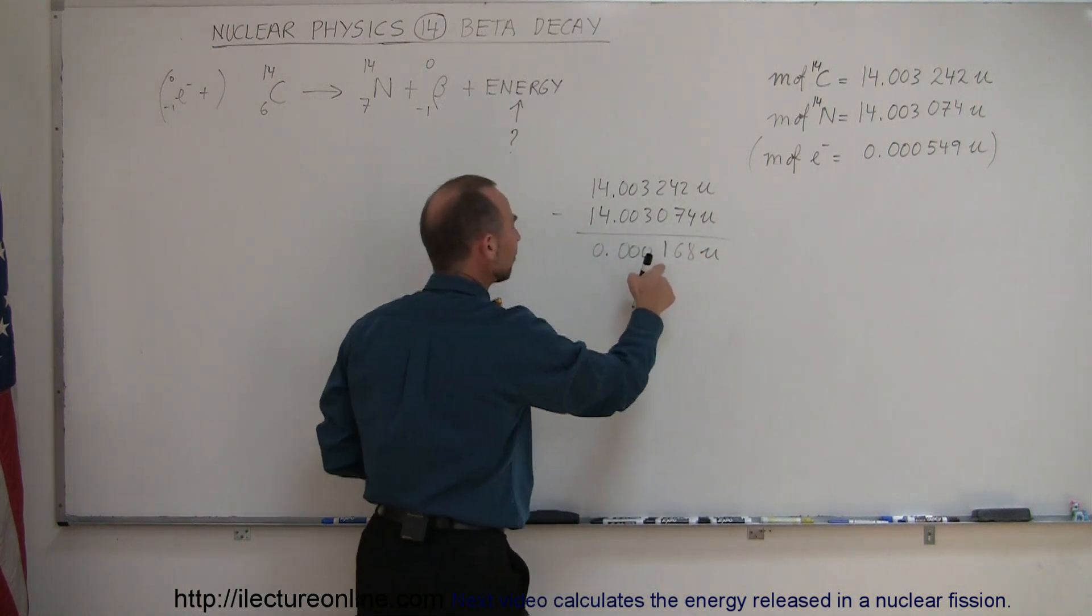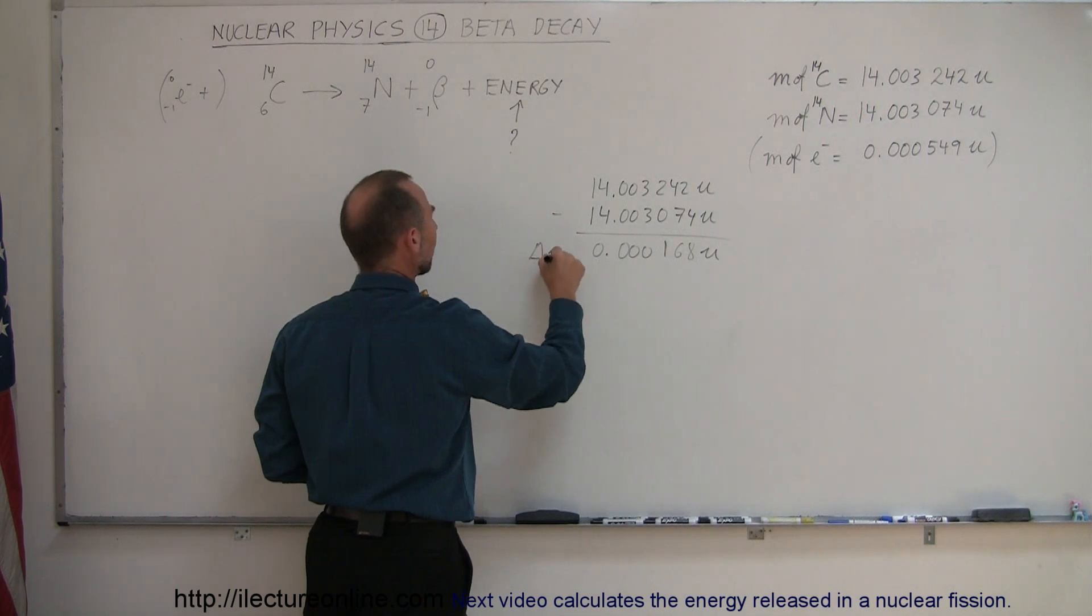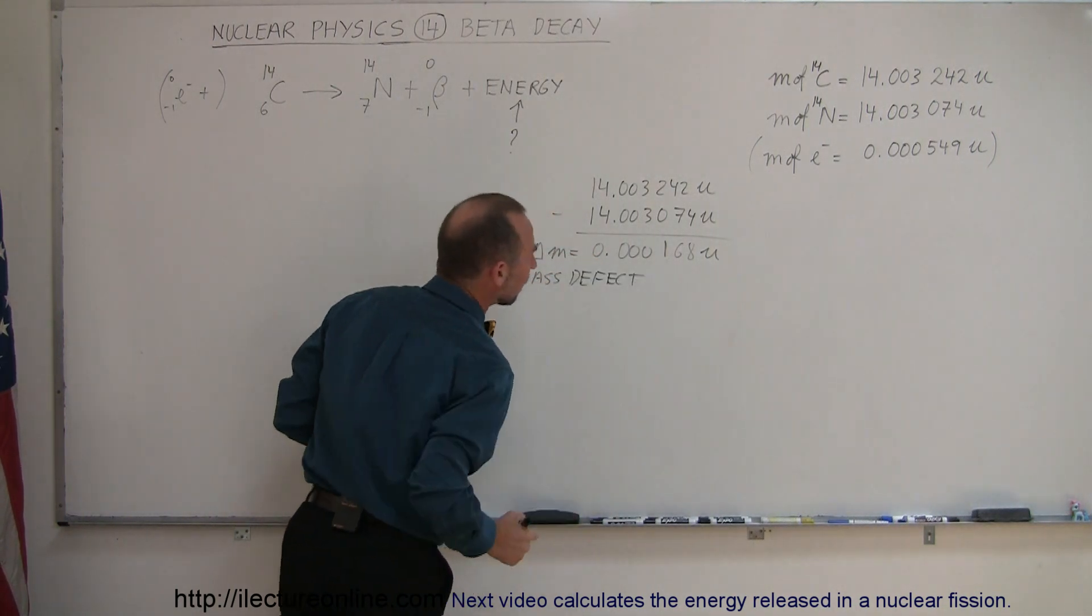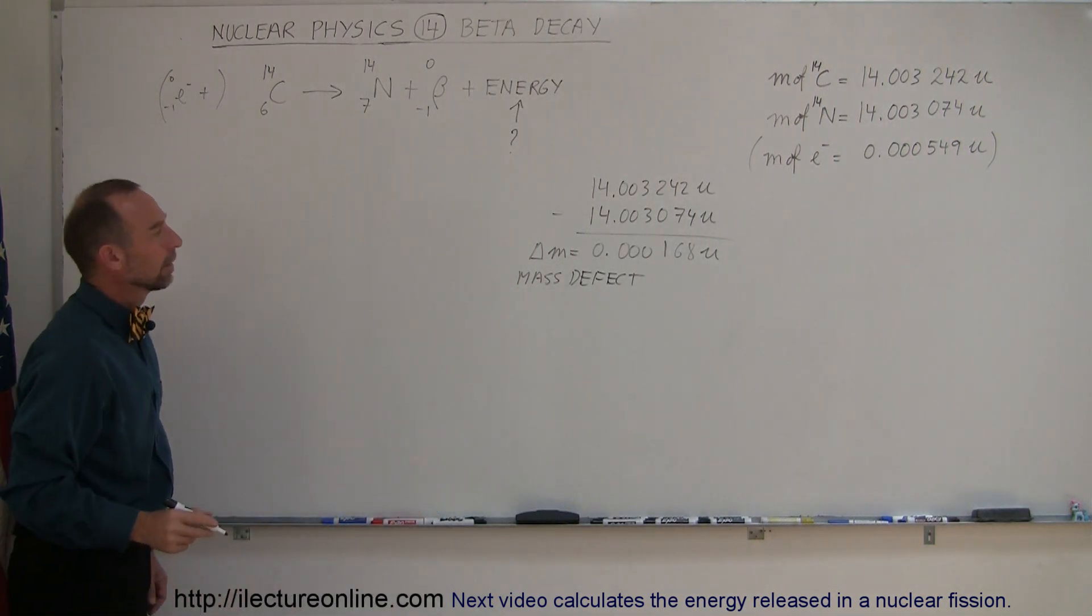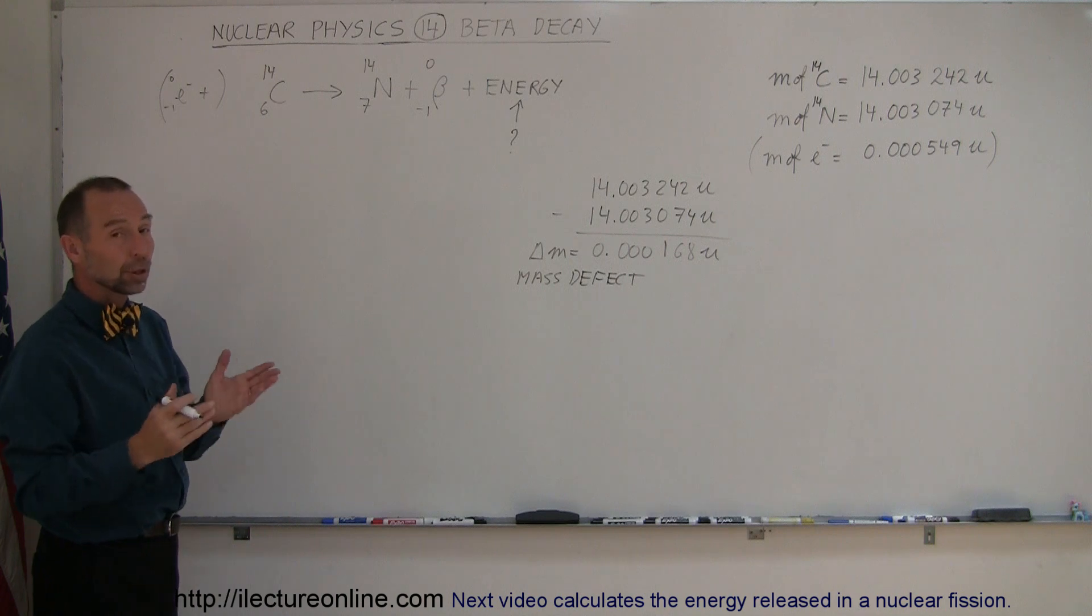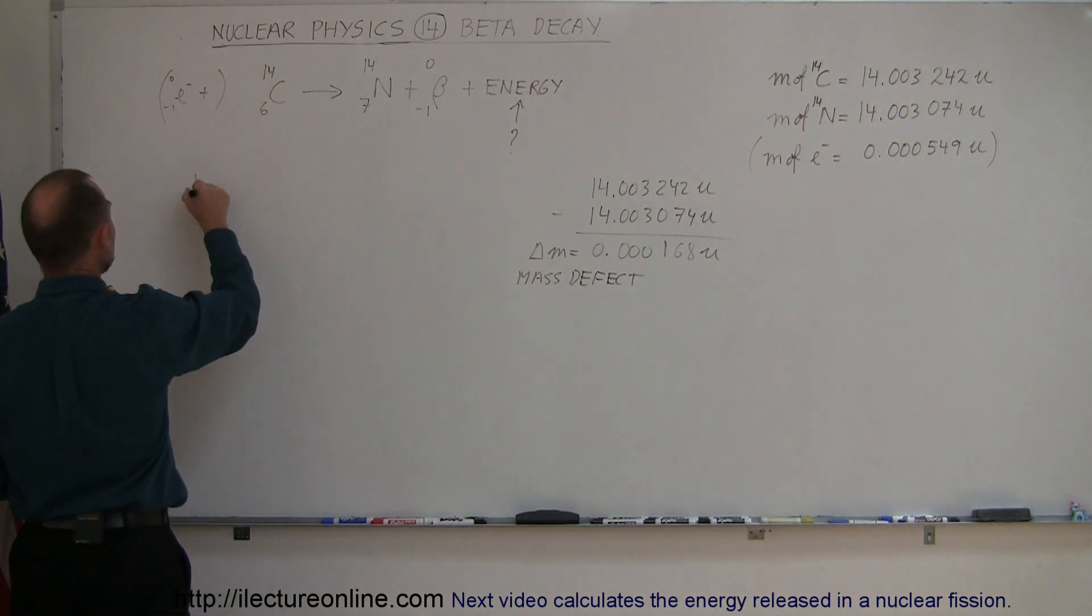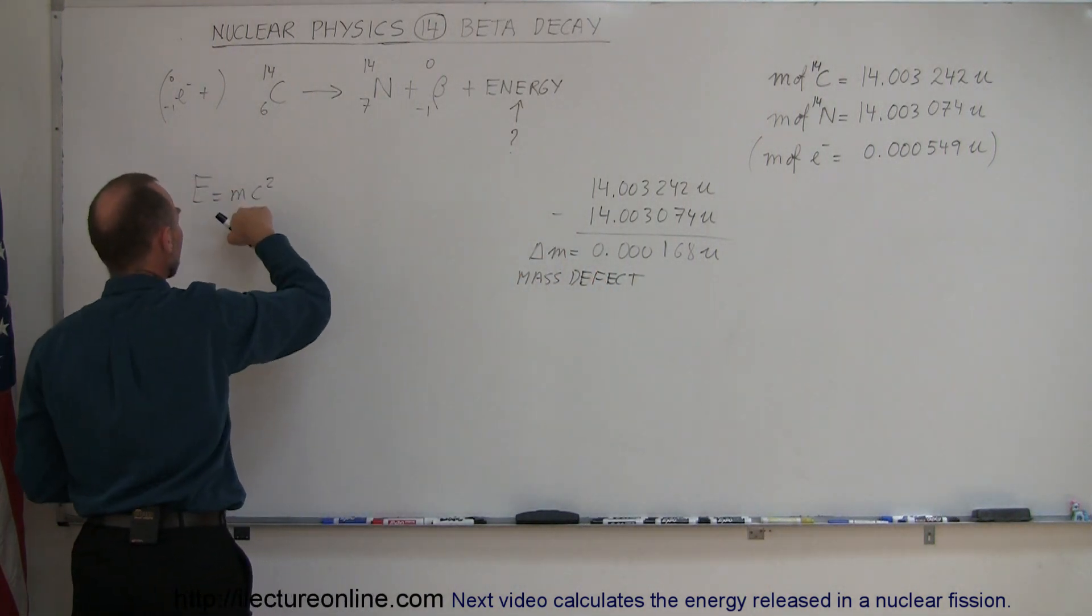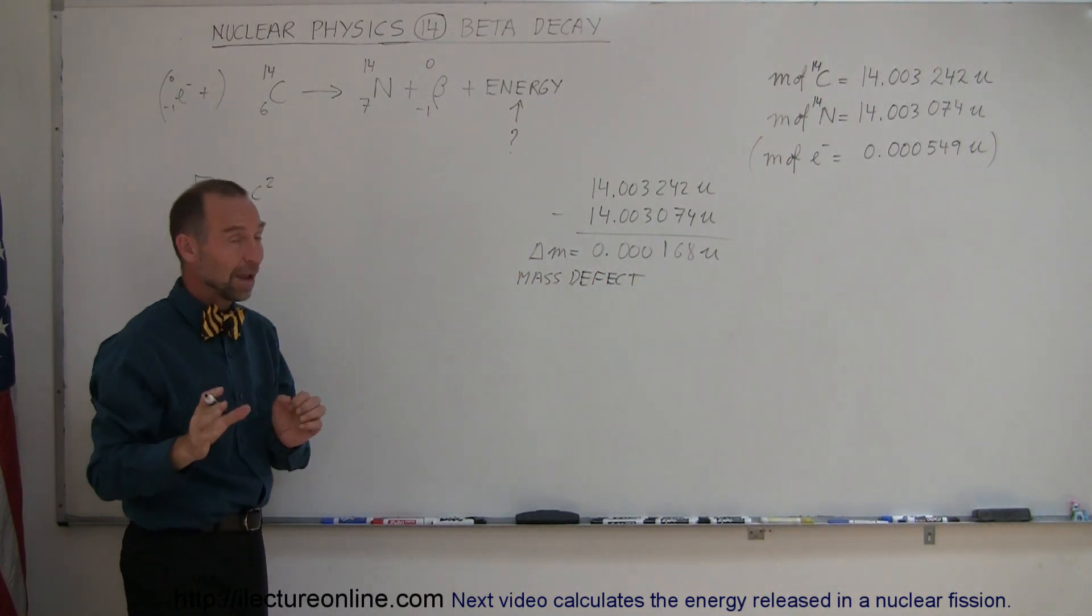So you can see that this is what we call the delta mass, the lost mass, or also called the mass defect. We have to convert that mass into the equivalent energy. We can do that in two ways. We can say that E equals mc squared, convert this mass into kilograms and plug it in here, or it turns out we have an easier way.